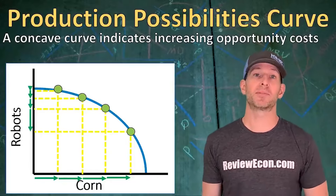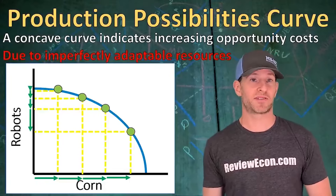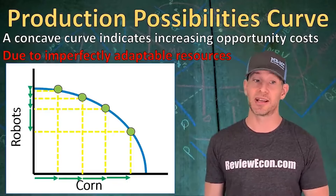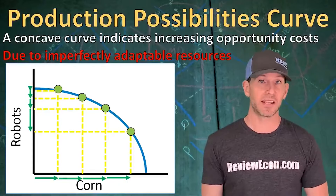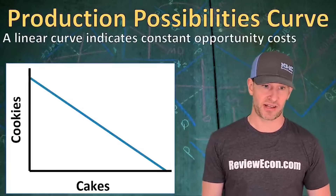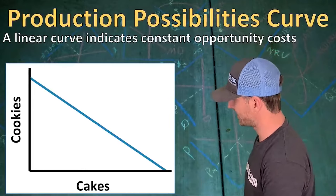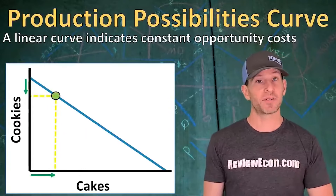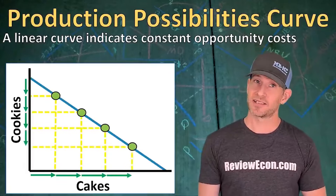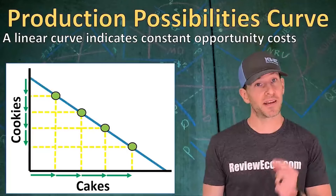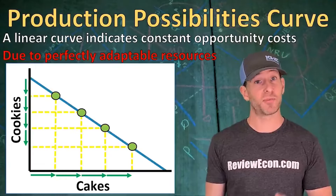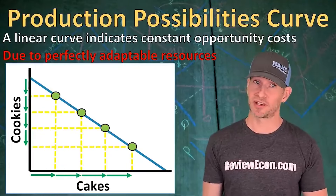The reason for increasing opportunity cost is due to imperfectly adaptable resources — the resources that are good at producing robots are not going to be equally good at producing corn. If you see a linear, straight-line production possibilities curve, that is an indication of constant opportunity costs, because the resources used to produce cake will be equally adaptable to the production of cookies and vice versa.